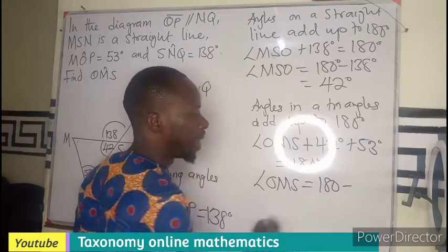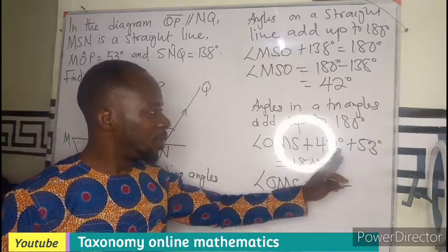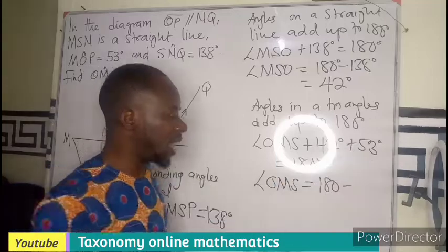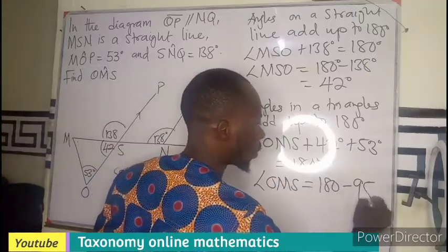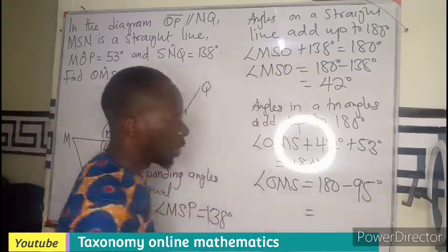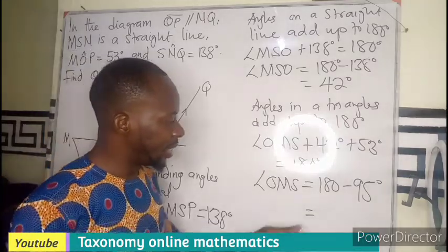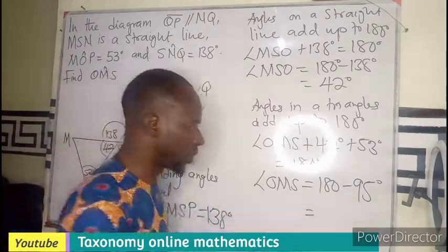So 180 minus the sum of this will be 95. So I think the other will be 85. So we have 85 degrees, which means the size of this angle is just 85.